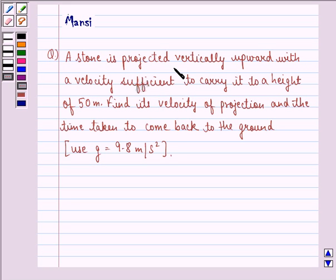The question says a stone is projected vertically upward with a velocity sufficient to carry it to a height of 50 meter. Find its velocity of projection and the time taken to come back to the ground.